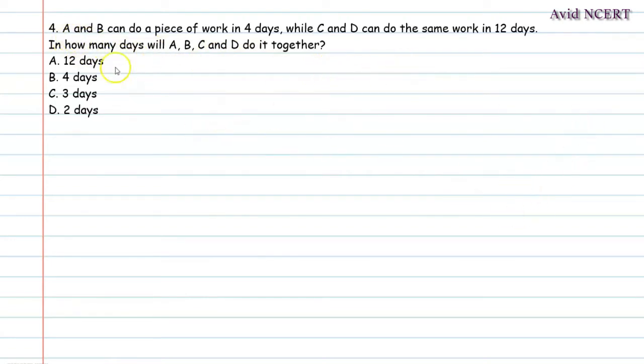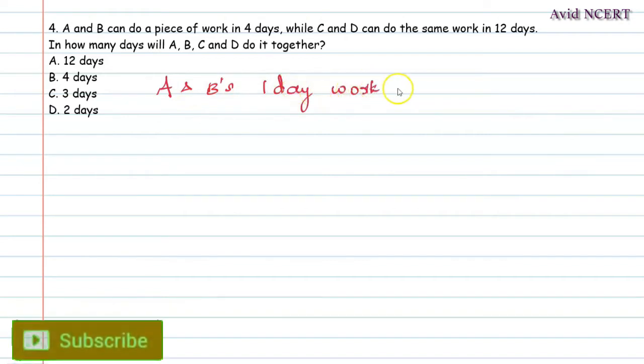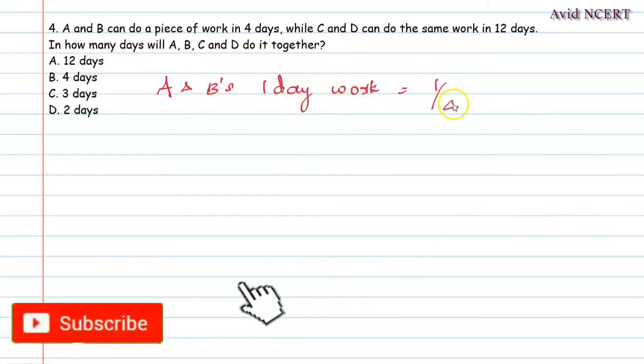In this case from the first sentence, A and B can do a piece of work in four days. That is A and B's one day work will be equal to 1 by 4.